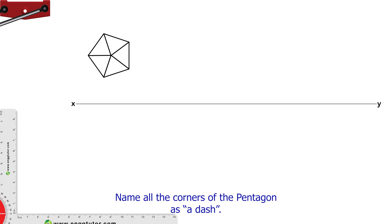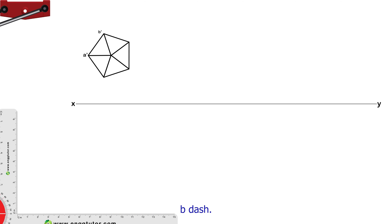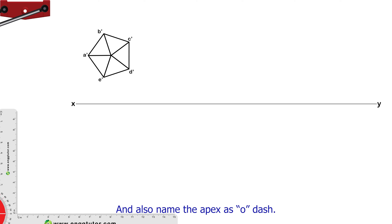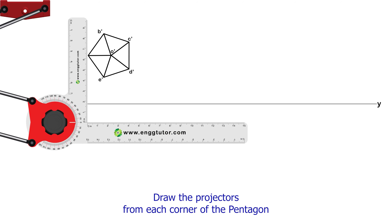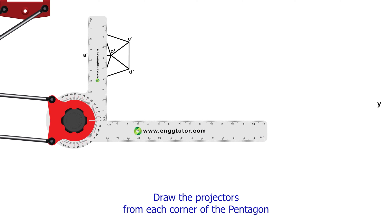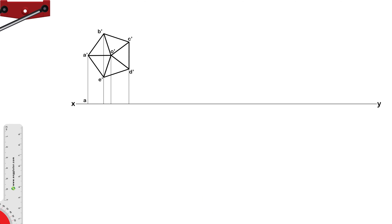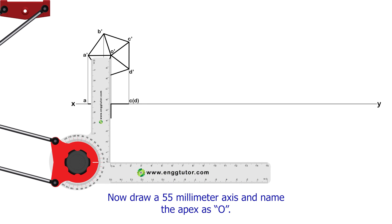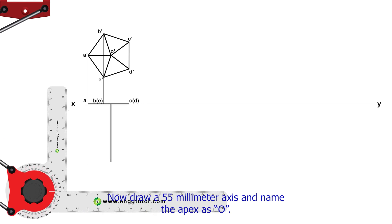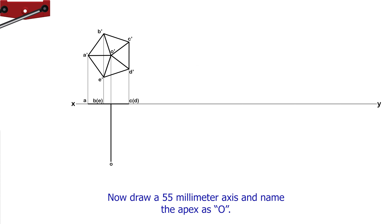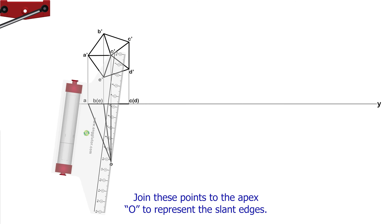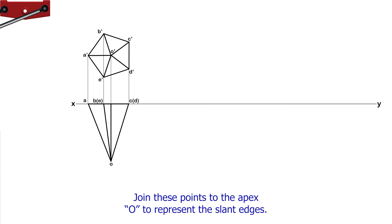Name all the corners of the pentagon as A', B', C', D', E', and also name the apex as O'. Draw projectors from each corner of the pentagon down to the reference line and name the corresponding points as A, B, E, C, D. Now draw a 55mm axis and name the apex as O. Join these points to the apex O to represent the slant edges.